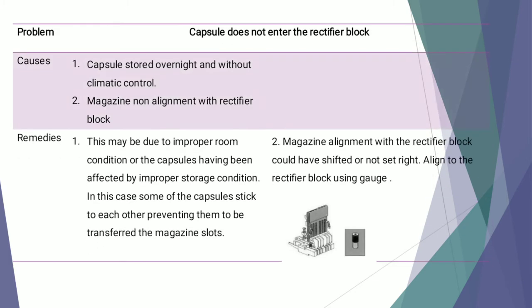The next defect is capsule does not enter the rectifier blocks. This can be caused by capsules stored overnight without climatic control, and by the magazine not being aligned with the rectifier block. Improper storage conditions cause capsules to stick to each other, preventing transfer through the magazine slots. The remedy is to store capsules properly and to align the magazine with the rectifier block using a gauze for proper alignment.